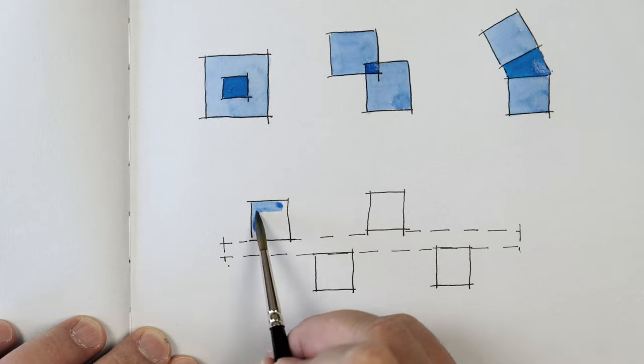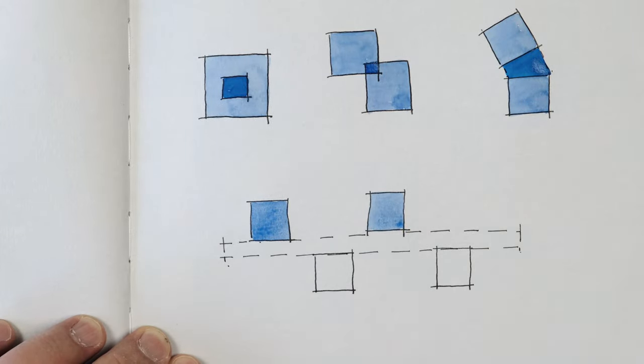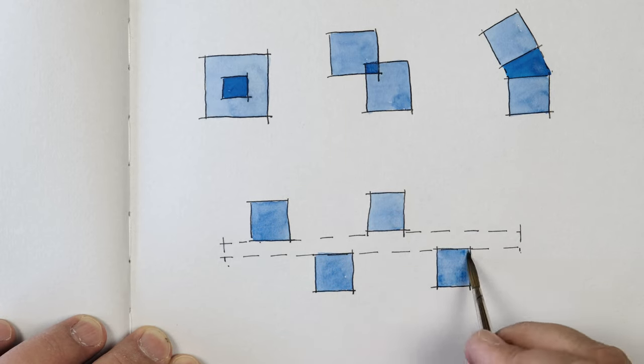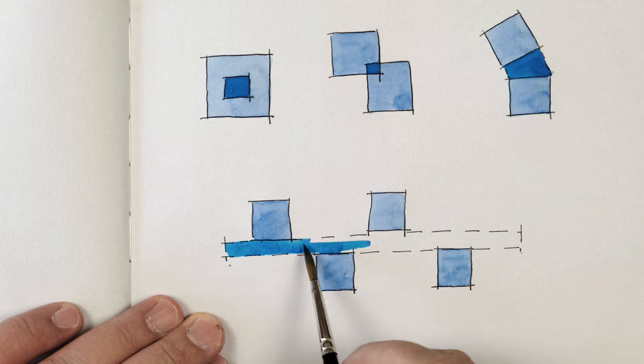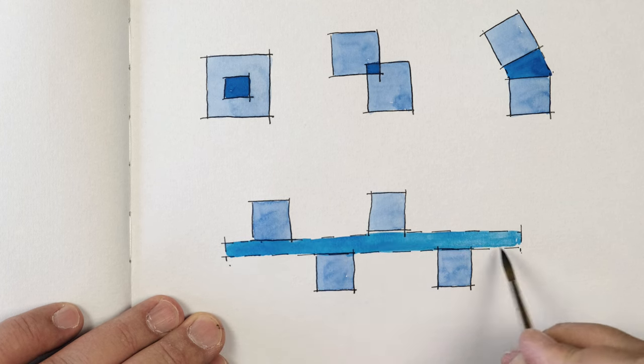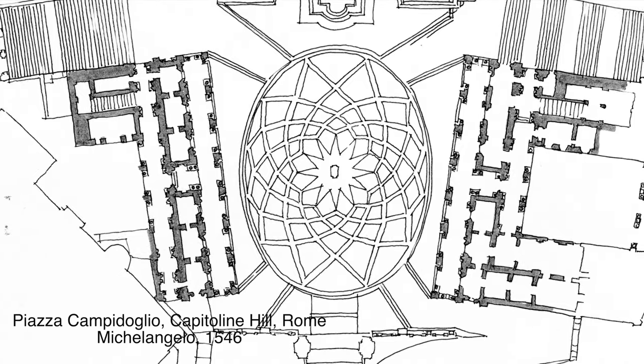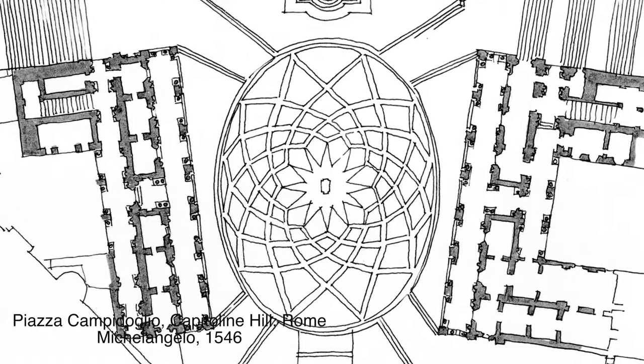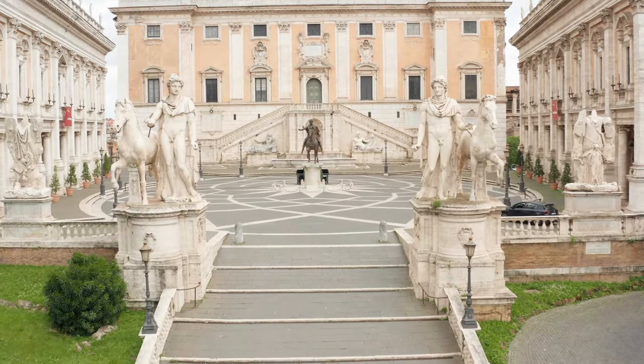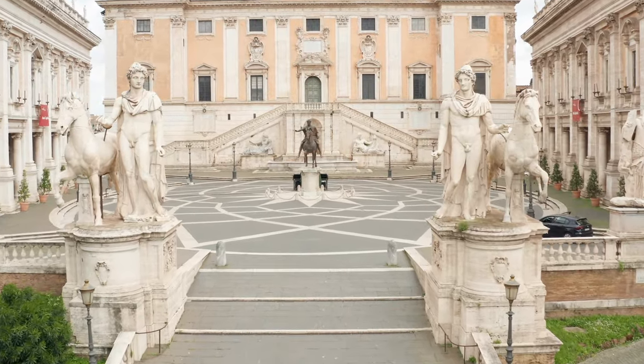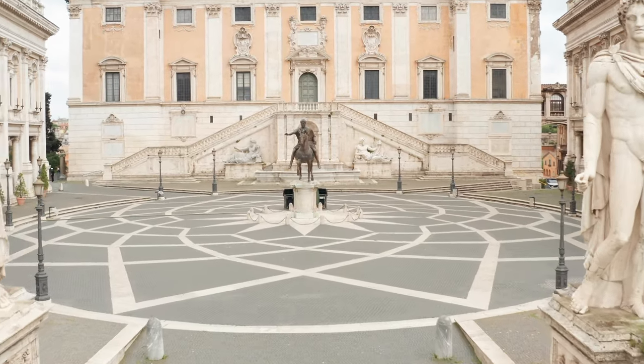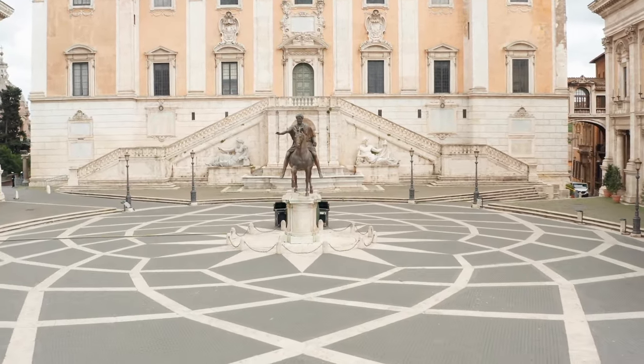Linked Space. Linked spaces are two or more separate spaces that are linked by a third intermediate space. This space was designed by Michelangelo in 1546. The main space is a piazza that is formed by the enclosing three buildings around it.